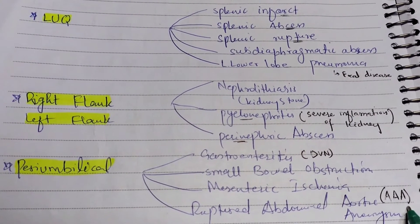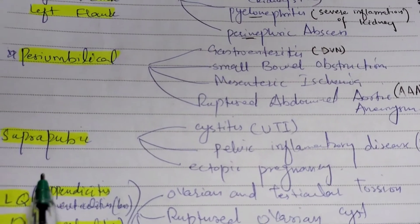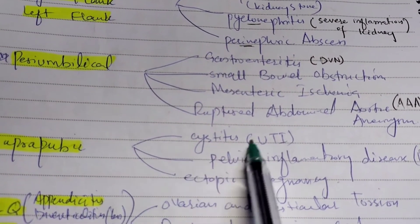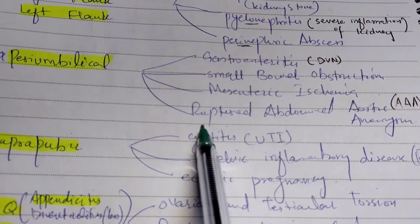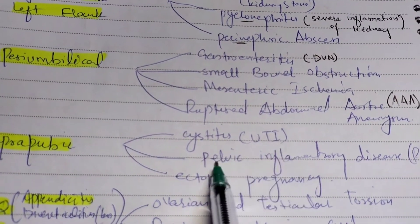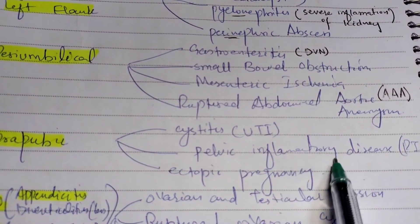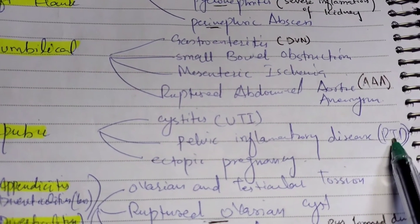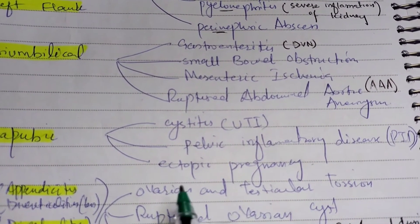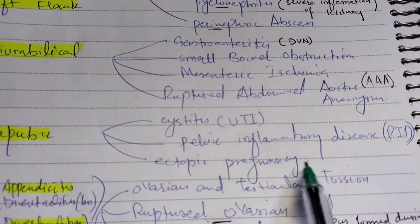If pain is in the suprapubic region, our differentials are cystitis, which is a urinary tract infection, pelvic inflammatory disease (PID), and ectopic pregnancy, where implantation of the egg occurs outside the womb.